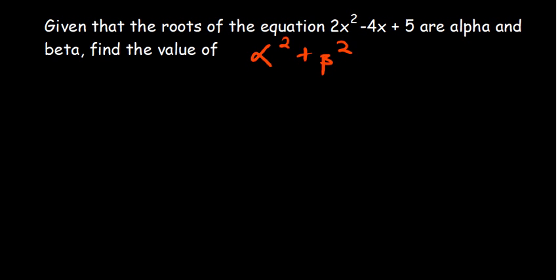The equation that we've been given is 2x² - 4x + 5. They want us to find the addition of α² + β². So we've been told alpha and beta are the roots of this equation that we have.